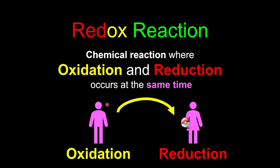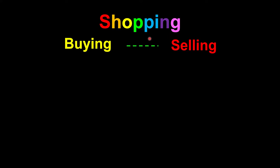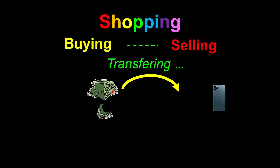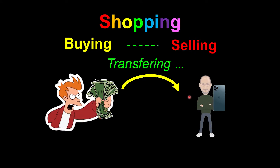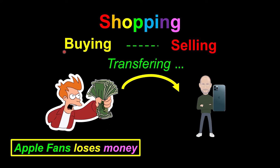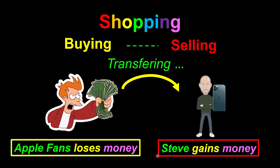When somebody loses the electrons, there must be another person gaining those electrons. You can think of redox reaction as basically just like shopping, where we must have two processes occur at the same time — a transfer of money between two parties: a buyer and a seller. Whoever loses the money undergoes the process of buying, and whoever gains the money undergoes the process of selling. In this analogy, buying illustrates oxidation — willing to lose everything else in order to gain oxygen, illustrated by the iPhone. Reduction is illustrated by the selling process, where you gain the electrons — the money here represents the electrons.